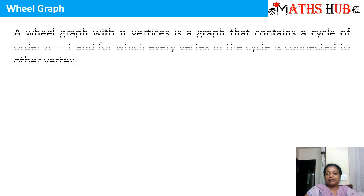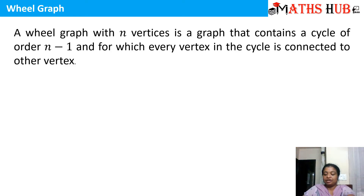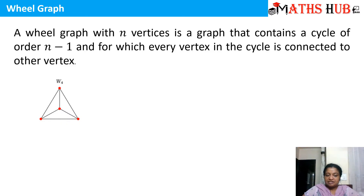A wheel graph is a graph with n vertices in which it contains a cycle of order n-1, and for which every vertex in the cycle is connected to another vertex. So 'order' means the length of the cycle should be n-1. This is a wheel graph with 4 vertices.